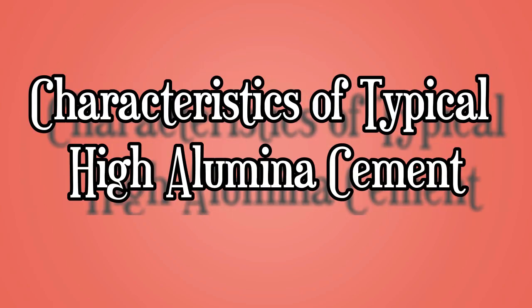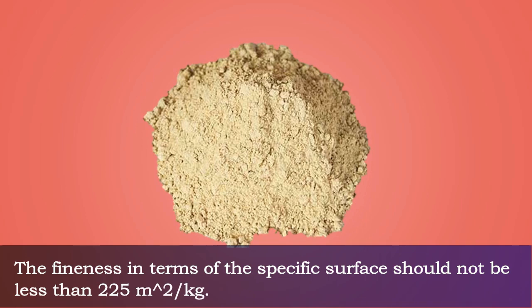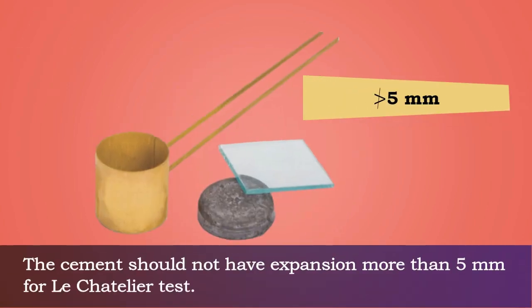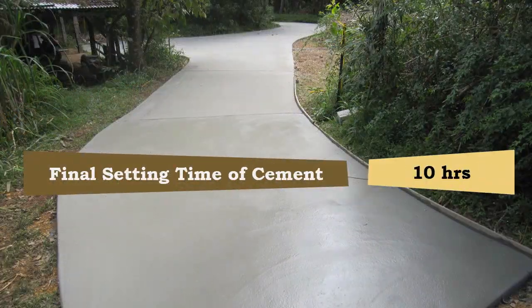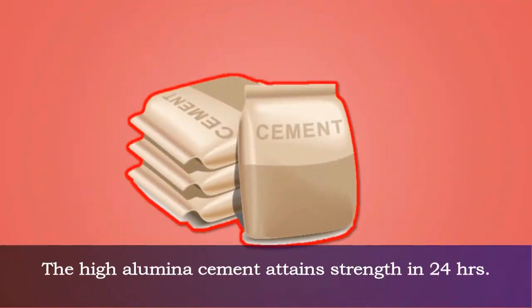Characteristics of typical high alumina cement: the fineness in terms of specific surface should not be less than 225 meters squared per kg. The cement should not have expansion more than 5 millimeters for the Le Chatelier test. The initial setting time of this cement is 30 minutes and the final setting time is 10 hours.